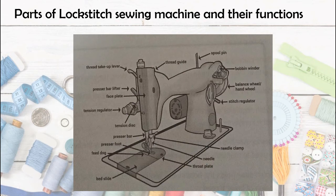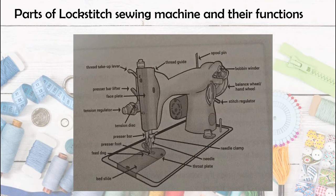The bobbin winder is the mechanism used to wind thread onto the bobbin. When the bobbin thread runs out, you place the bobbin on the bobbin winder and it winds new thread onto it by rotating. Next, the stitch regulator controls the length of the stitch. It can also be set to stitch in reverse for reinforcing stitches. You set the stitch length — whether 1mm, 2mm, 3mm, 4mm, or 5mm.